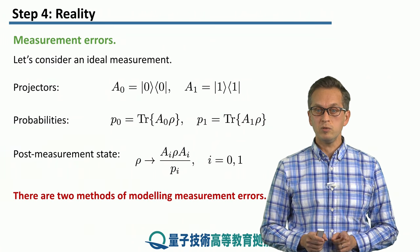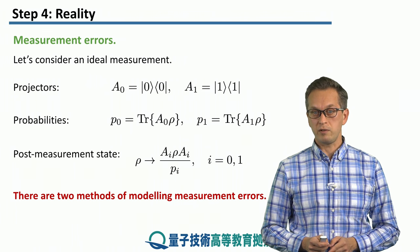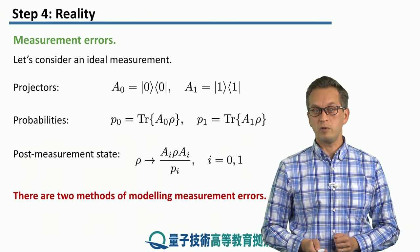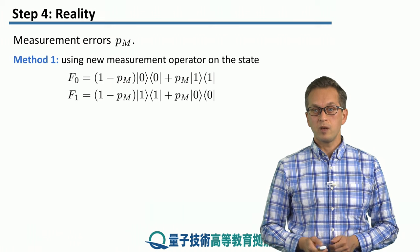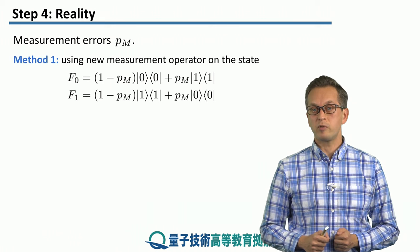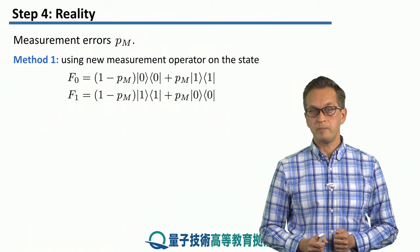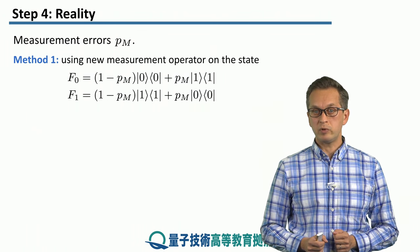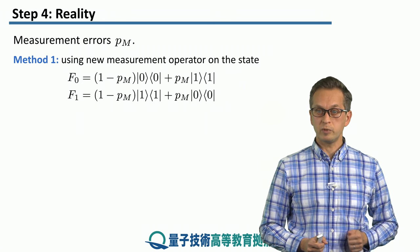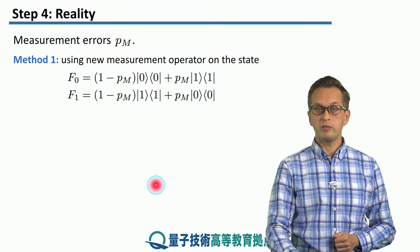Now, there are two methods of modeling measurement errors. And we're going to consider both of them. The first method is the following. We have some measurement error probability, and we're going to call it PM. And rather than applying the ideal projection operators, A0 and A1, from the previous slide, we're going to apply the following projectors. We're going to call them F0 and F1.